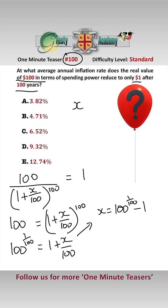Doing this on a scientific calculator, we get that X is approximately 4.71%. So with an inflation rate averaging 4.71%, which is answer B, $100 today is only worth $1 in spending power in 100 years.